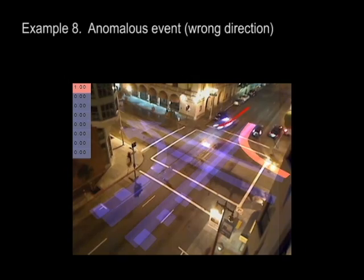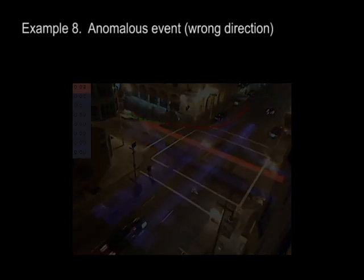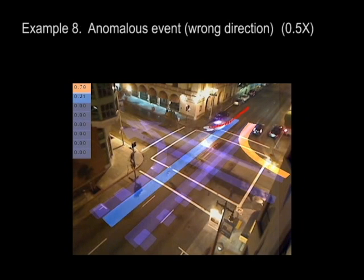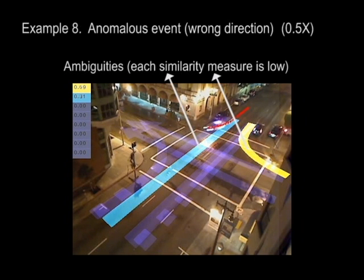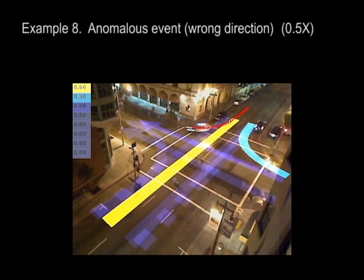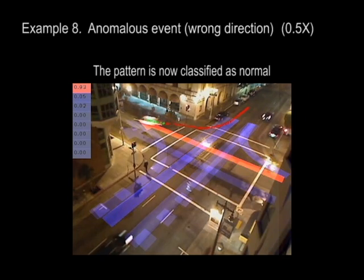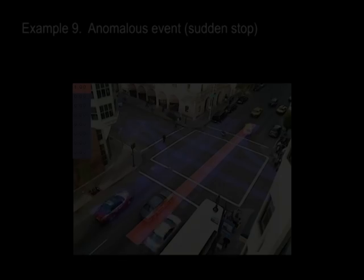Now we demonstrate anomaly detection. Our approach identified an anomalous track of a police car going in the wrong direction. Though two patterns have high dominance, their actual similarities are small since this pattern is not close to either GPRF. Thus, it is classified as an anomalous track and labeled in red. Finally, it becomes green as the trajectory merges with a learned pattern.